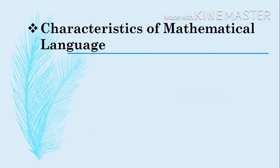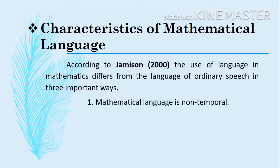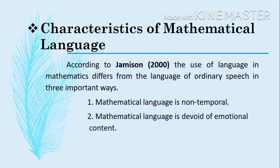Let's now have the characteristics of mathematical language. According to Jamison 2000, the use of language in mathematics differs from the language of ordinary speech in three important ways. First, mathematical language is non-temporal. When we say non-temporal, meaning there is no past, no present, and no future in mathematical language. The second one, mathematical language is devoid of emotional content.